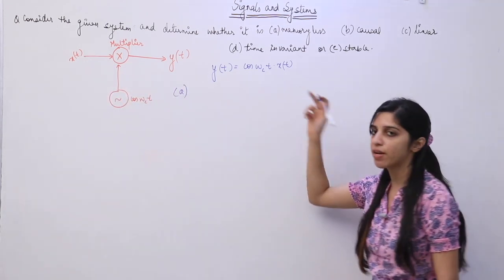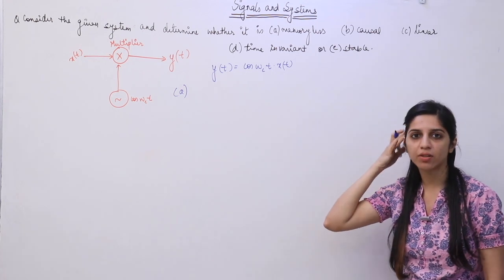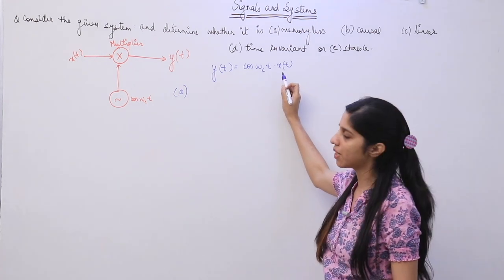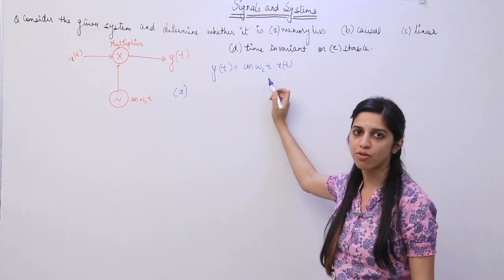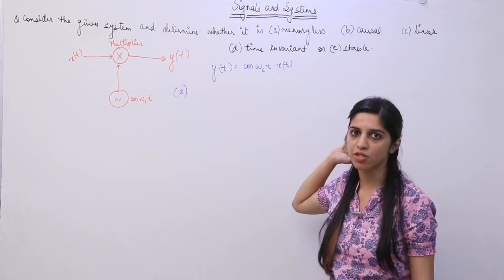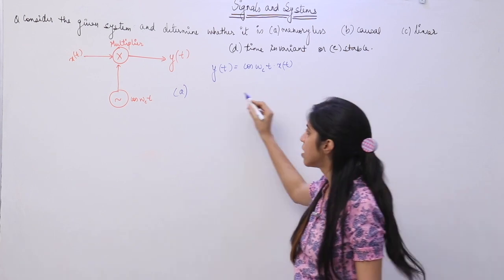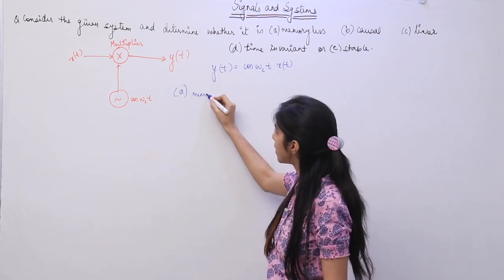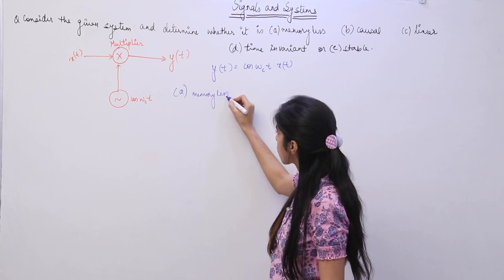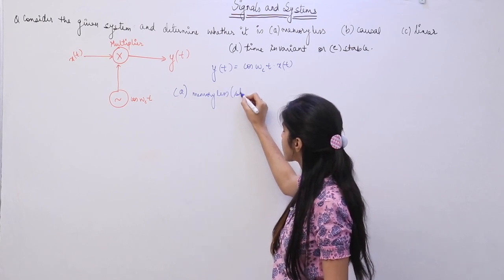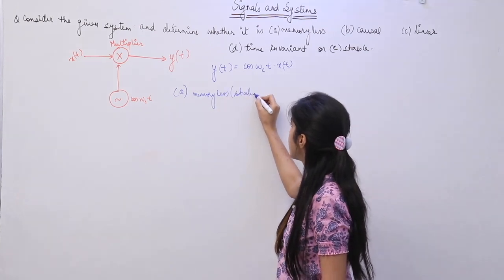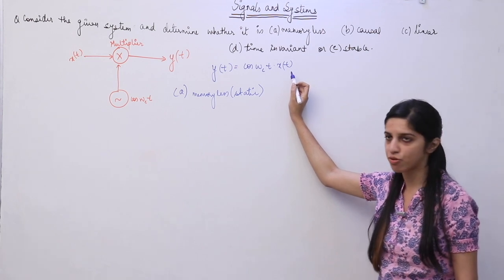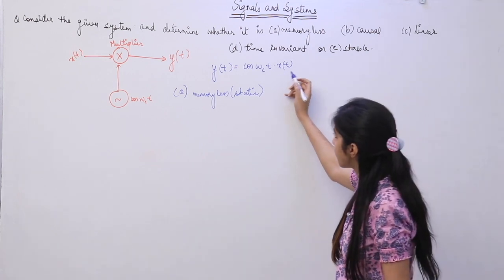How do we identify if a system is static or dynamic? This system does not depend on any past values of input. Therefore, it is not having any provision of memory. So the system is going to be memoryless or static. Static means this depends only on the present values of input.